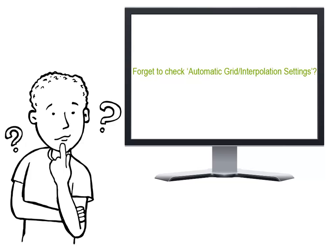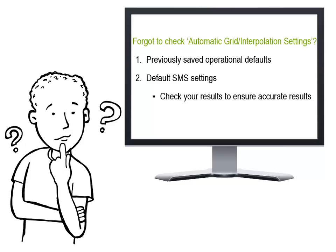So what happens if you don't choose to use the automatic grid and interpolation settings but don't remember to modify the default settings for all of your operations? In this case, SMS will first check to see if you have previously saved any operational defaults, and if so, will use those settings. If no operational defaults have been saved, the software will use the default settings of SMS, which may or may not be suitable for each of the operations you work with, so be sure to review the results after the first few fields.